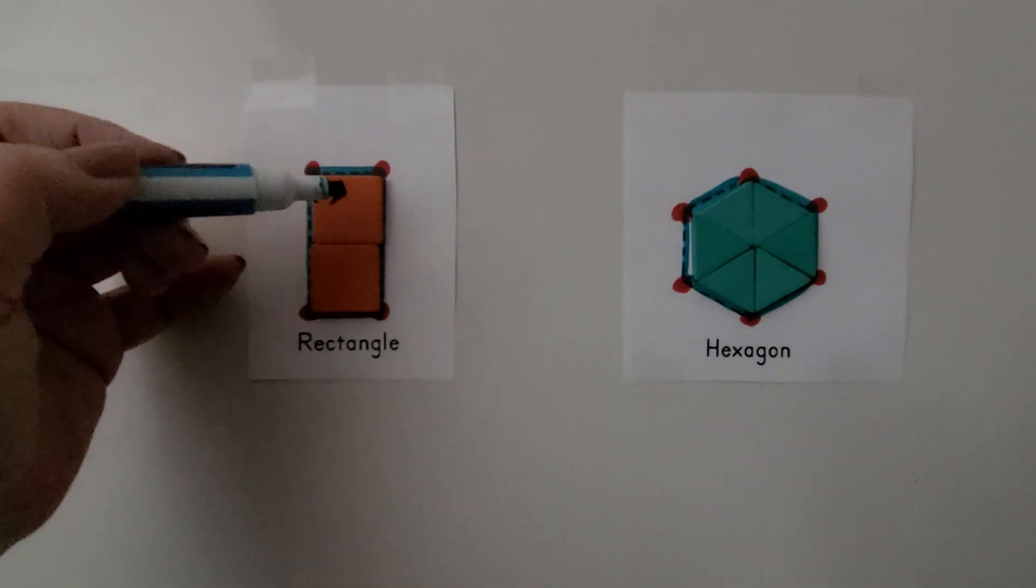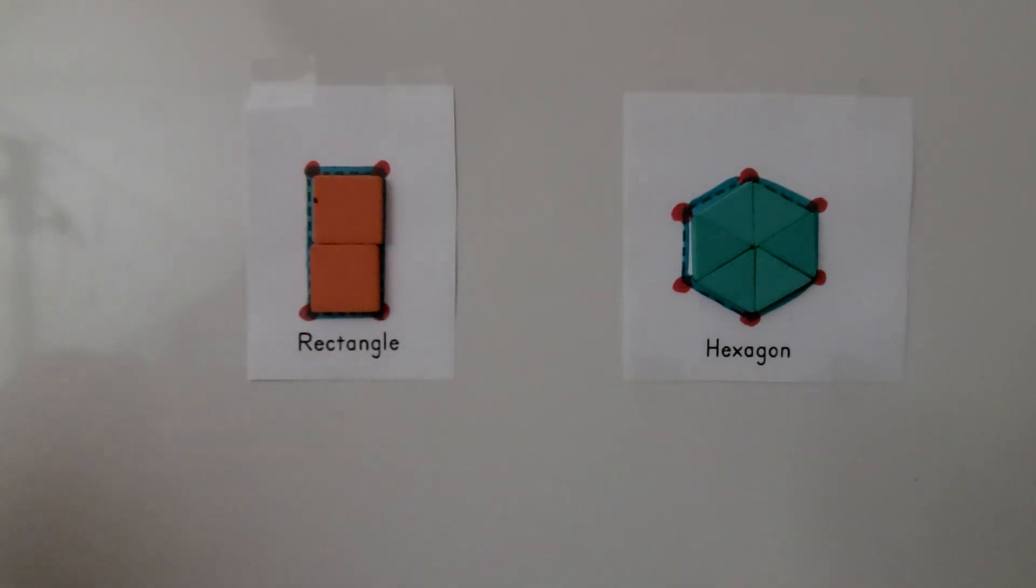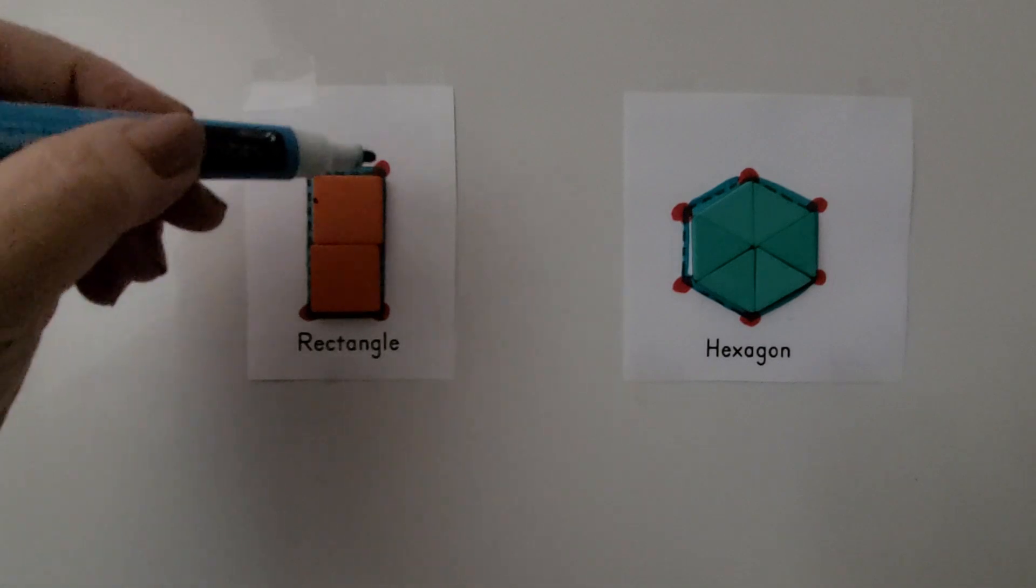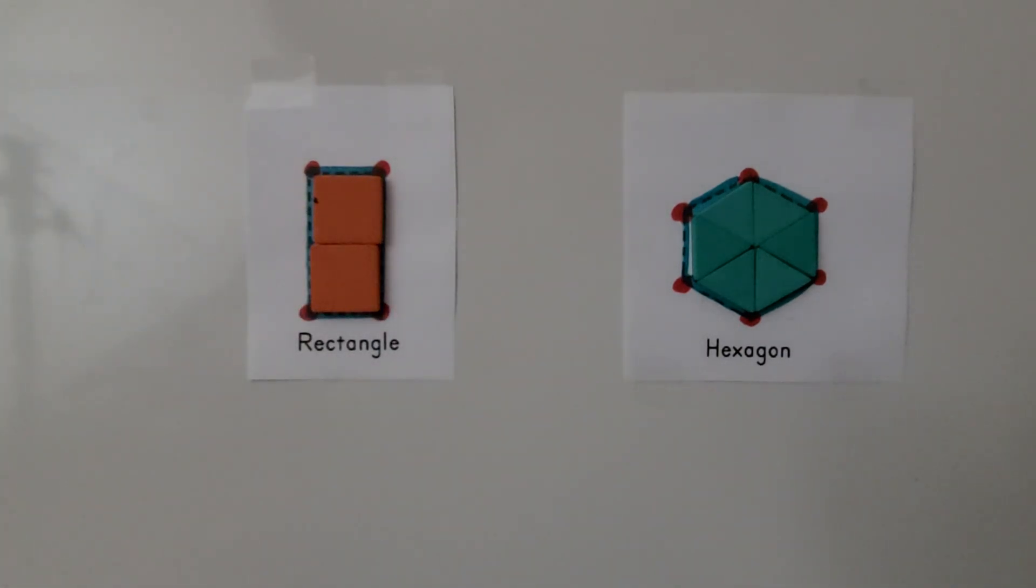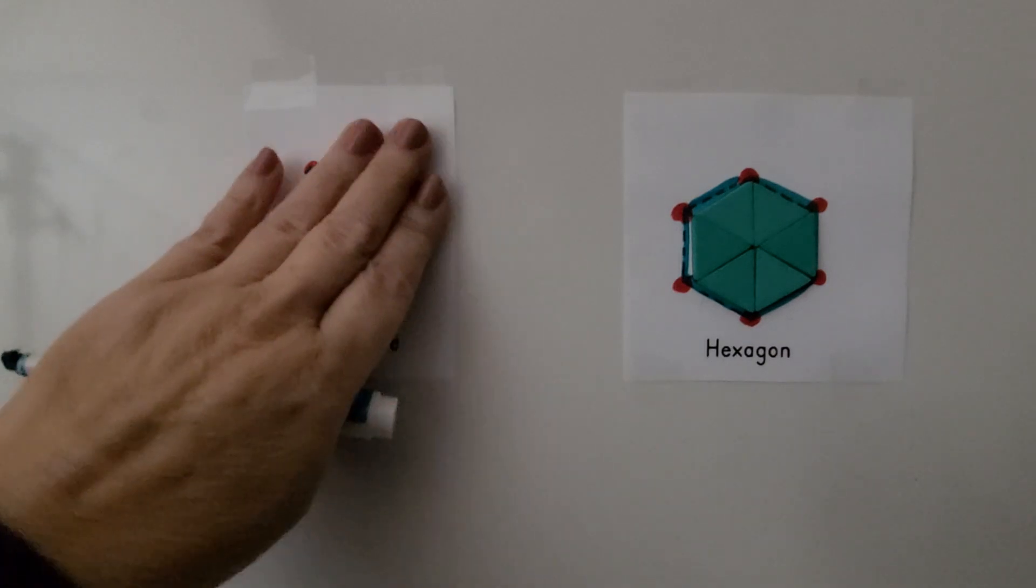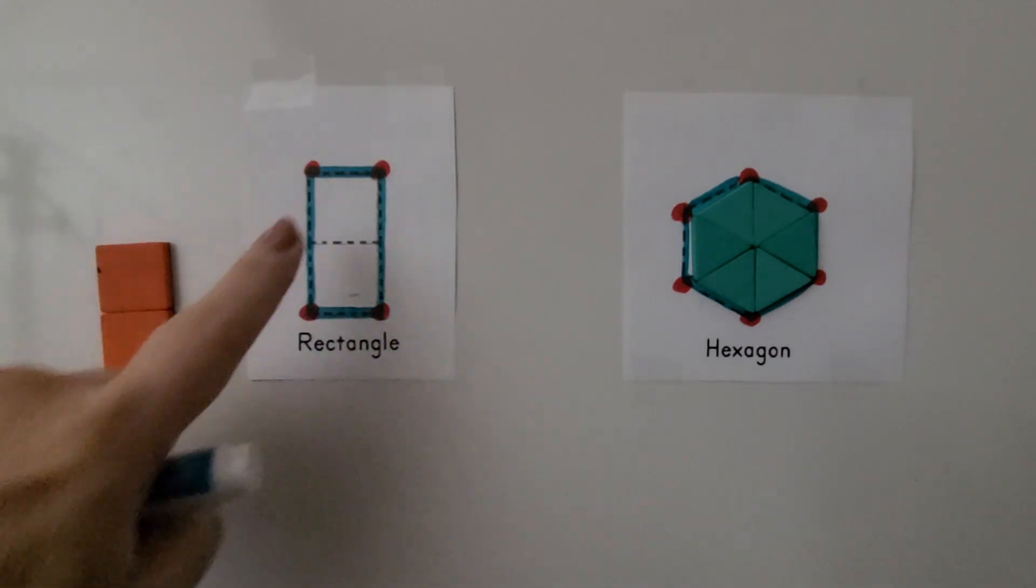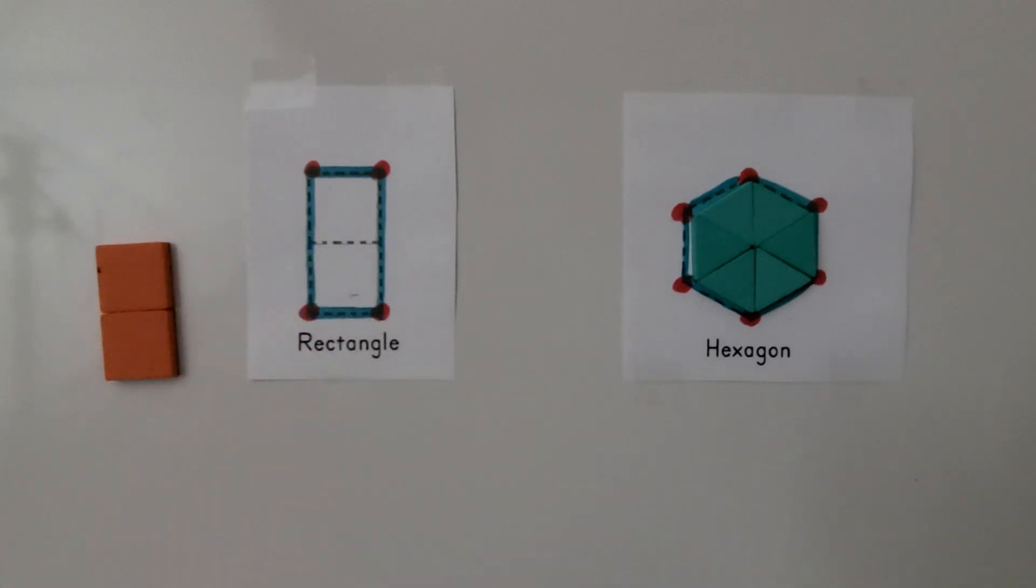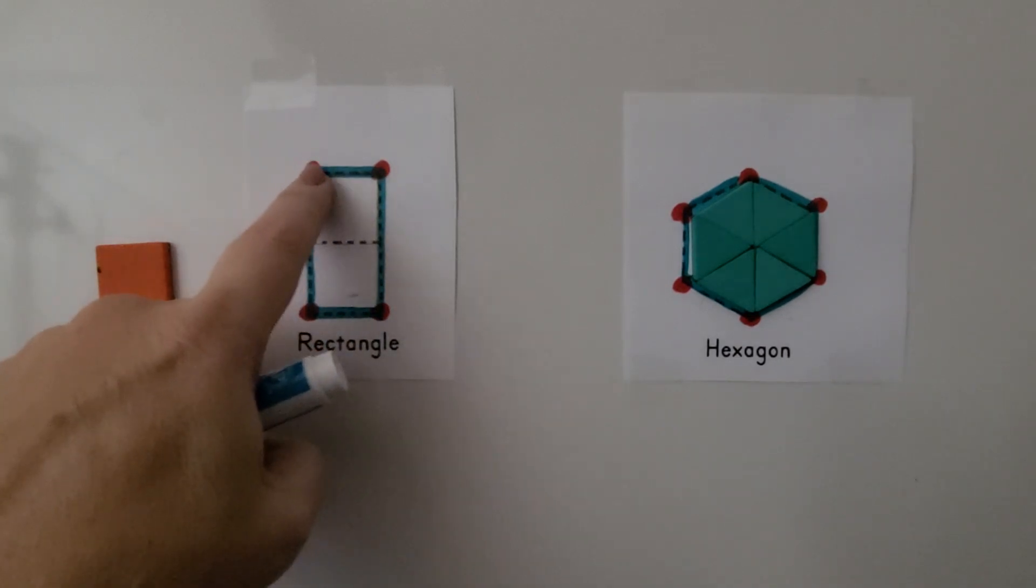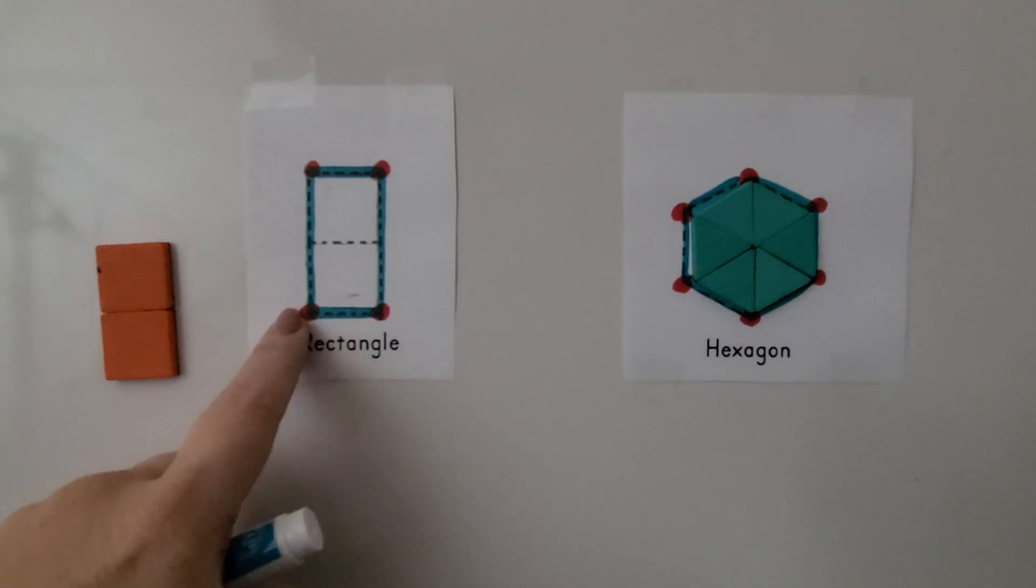So we made a rectangle with two squares. If we trace around the outside, we'll see the rectangle has four sides. One, two, three, four. And four square vertices. One, two, three, four.